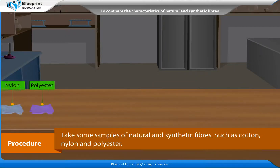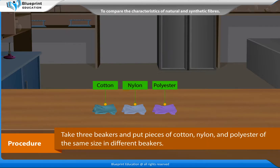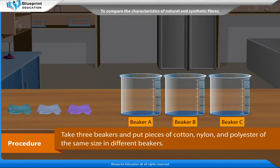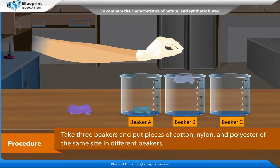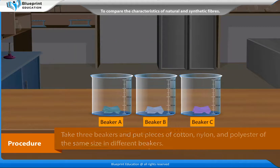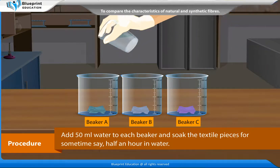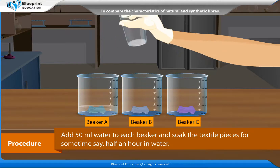Procedure: Take some samples of natural and synthetic fibers, such as cotton, nylon and polyester. Take three beakers and put pieces of cotton, nylon and polyester of the same size in different beakers. Add 50 ml water to each beaker and soak the textile pieces for some time, say half an hour in water.